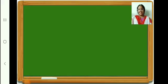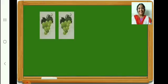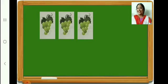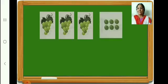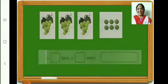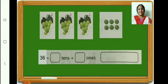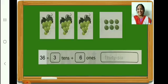Let us count and see how many grapes are in this one. 10. Here, 10. In this box, 10. In the fourth box, how many grapes? 6. So in all, count and see — 36. 36 is equal to 3 tens plus 6 ones. Write in your book. Now write the number name 36 also. Let us go on to the next.